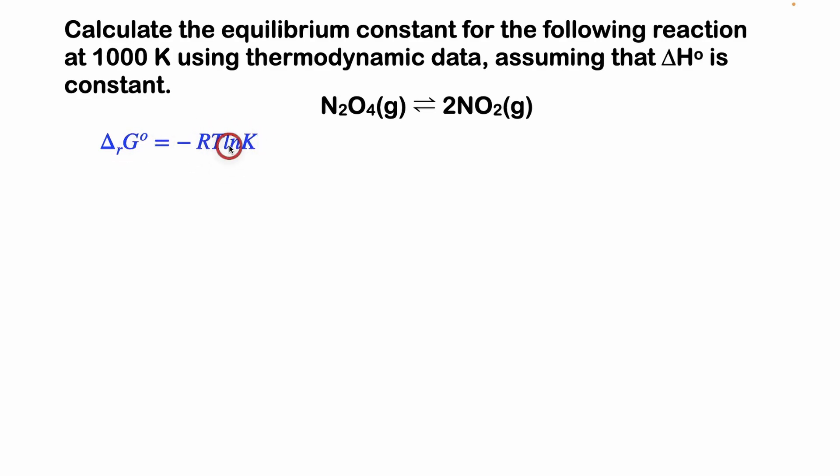So we can use this equation to solve for K, but we need to know what the change in standard Gibbs energy of the reaction is, and we're going to do that from the Gibbs energy of formations by products minus reactants. So we need to know what the standard Gibbs energy of formation of the products and the reactants are. So we're going to jump to our table to get that.